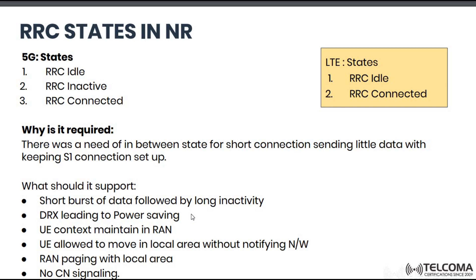In the inactive state, the UE can send small amounts of data at particular time intervals as per application requirements. Importantly, the UE is allowed to move in a local area without notifying the network — it does not need to go into connected mode to report moving from one gNodeB to another. This is supported by RAN paging with local area, with no core network signaling required. This gives more flexibility and dynamicity for when the UE wants to send or receive little data from the network.